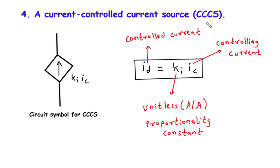To summarize, the current-controlled current source, or CCCS, is a component that generates an output current ID which is directly proportional to the controlling current IC. This relationship is defined by the unitless proportionality constant K. By adjusting the controlling current, we can control and amplify the output current. I hope this video has provided you with a clear understanding of the CCCS and its functionality. If you have any questions, please feel free to leave them in the comments below. Thank you for watching and stay tuned for more informative videos on electronic components and circuitry.